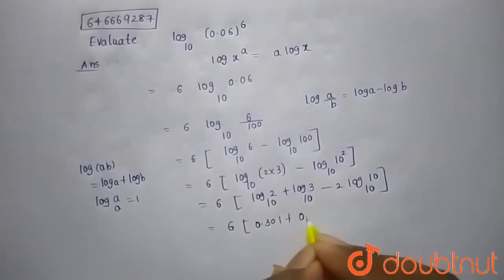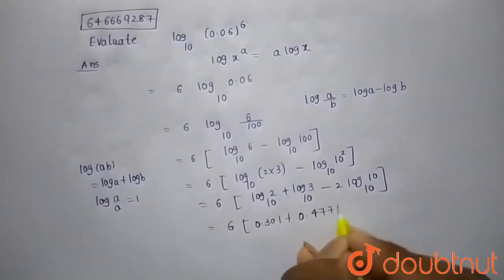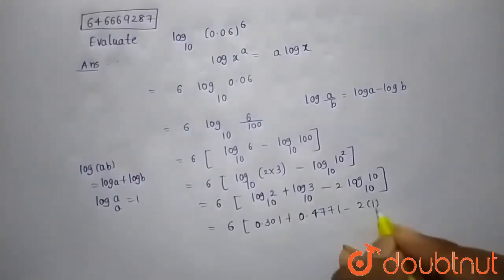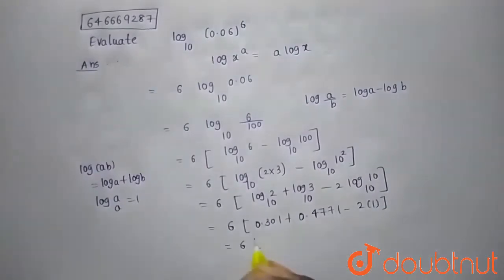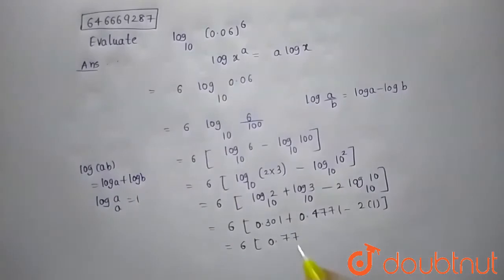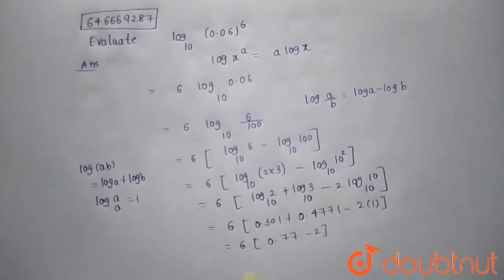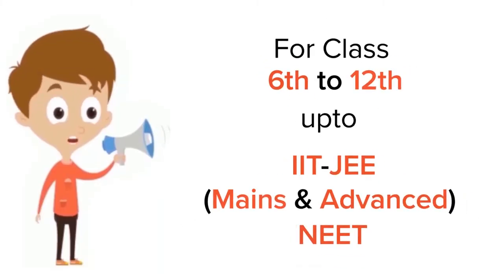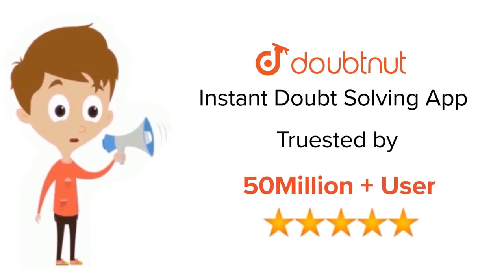And similarly from logarithmic table this value is 0.4771 and minus 2 into 1. And that will be equals to, this is nothing but on approximating it will become 0.77 minus 2 and after multiplication we will get minus 7.38. So the value of given expression is minus 7.38. For class 6-12, IIT-JEE and NEET level, trusted by more than 5 crore students, download Doubtnet.